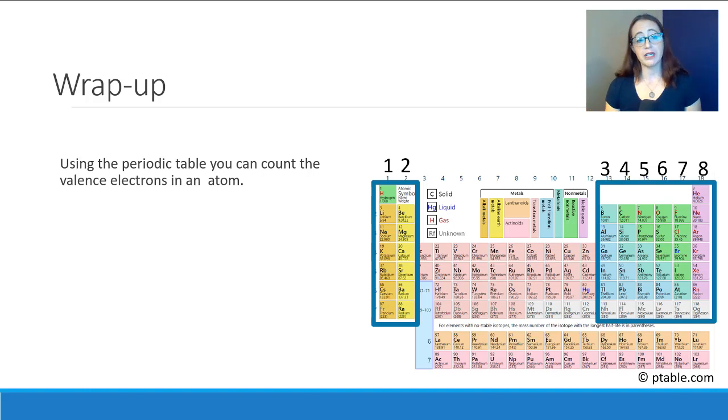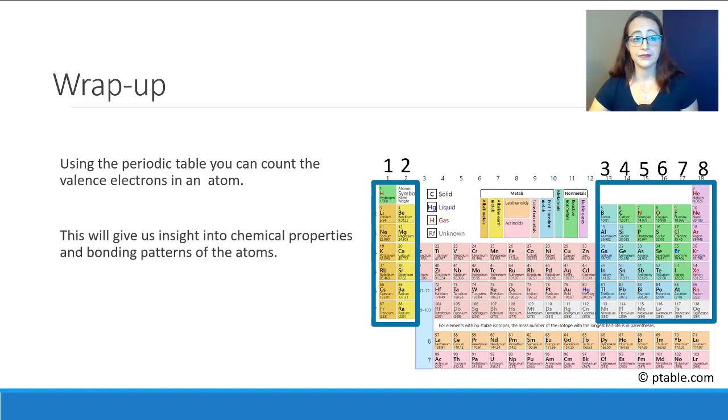To wrap up, we can use the periodic table to count the valence electrons in an atom. This is going to give us some insight into the chemical properties and bonding patterns of the atoms. And remember to go ahead and skip the d-block when we are talking about these. So we'll just count like I have here: one, two, three, four, five, six, seven, eight.